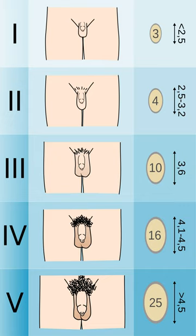Tanner 5, Hair extends to medial surface of the thighs, 15+.